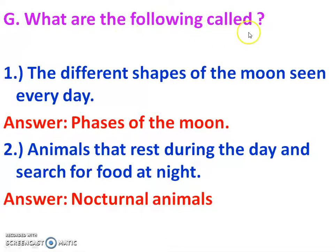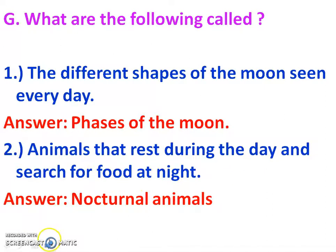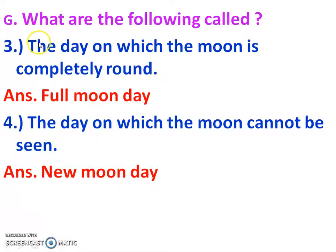Section G: What are the following called? Question 1: The different shapes of the moon seen every day are called the phases of the moon. Question 2: Animals that rest during the day and search for food at night are called nocturnal animals. Question 3: The day on which the moon is completely round is called the full moon day. Question 4: The day on which the moon cannot be seen is called the new moon day.